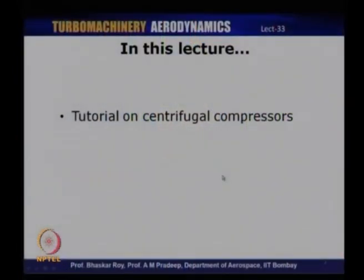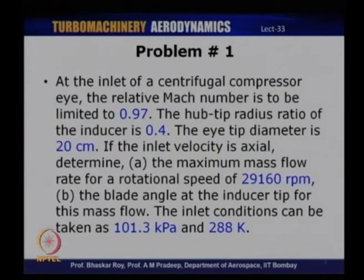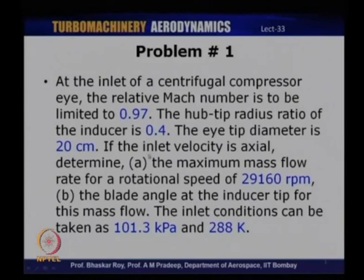The first problem statement: at the inlet of a centrifugal compressor, the relative Mach number is to be limited to 0.97. The hub-to-tip radius ratio of the inducer is 0.4. The tip diameter is 20 centimeters. If the inlet velocity is axial, determine: part (a) the maximum mass flow rate for a rotational speed of 29,160 rpm, and part (b) the blade angle at the inducer tip for this mass flow.